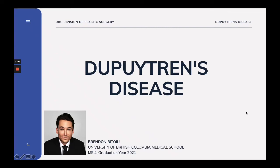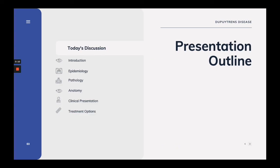Hi everyone, my name is Brennan Batoiu. I'm a fourth year medical student at UBC and I'm graduating in the year 2021. Today's lecture is on Dupuytren's disease. Today's discussion, we're going to start with an introduction. We're going to discuss the epidemiology, the pathology, the relevant anatomy, the clinical presentation, and then the different treatment options that are available.